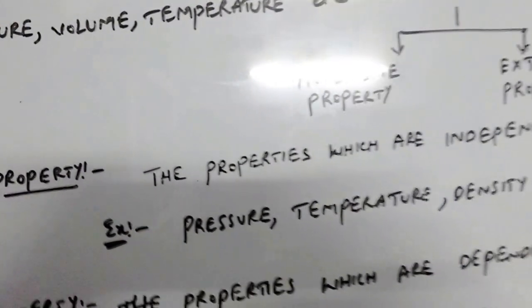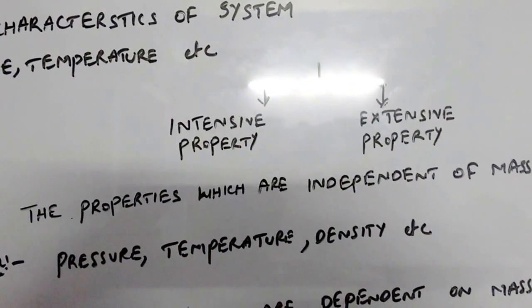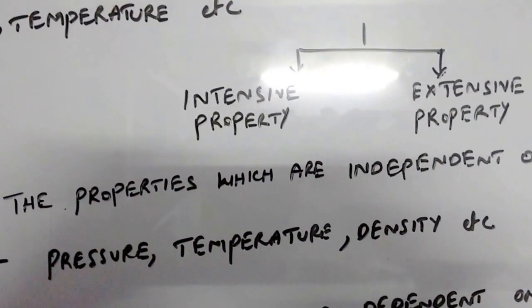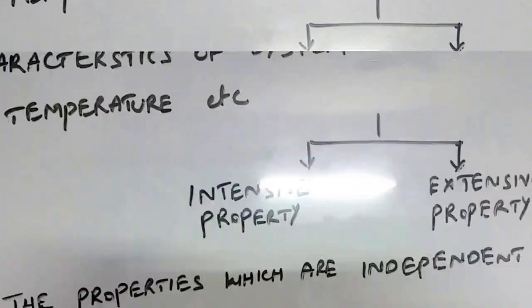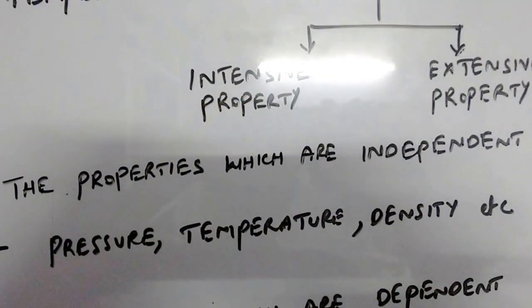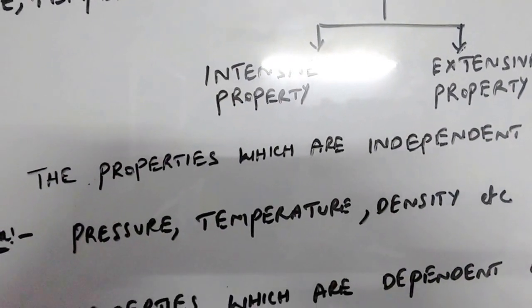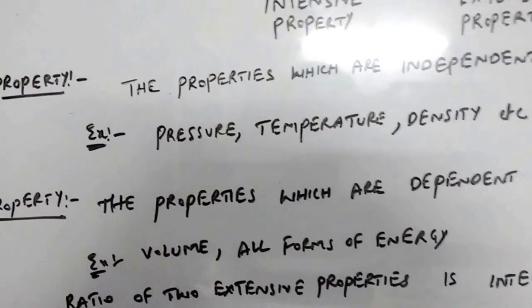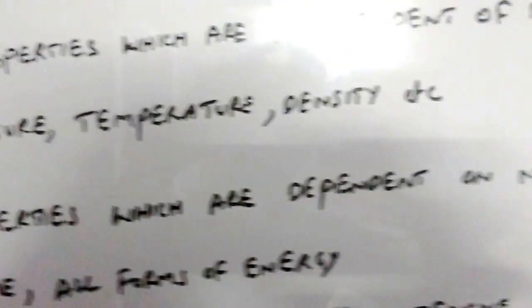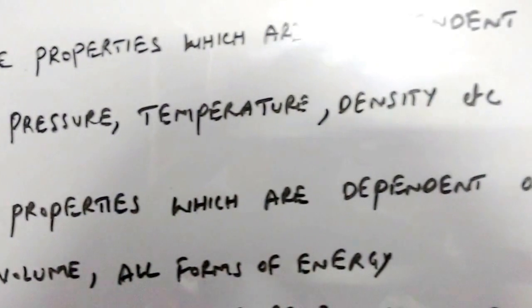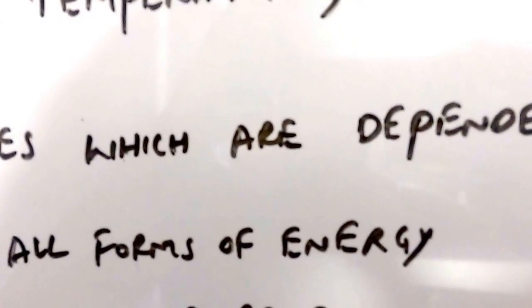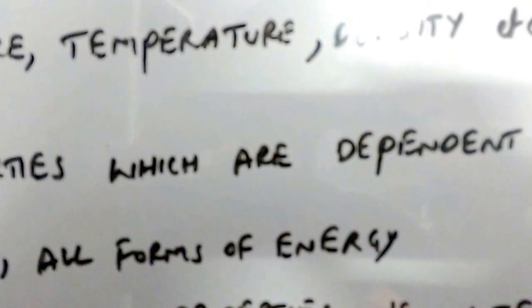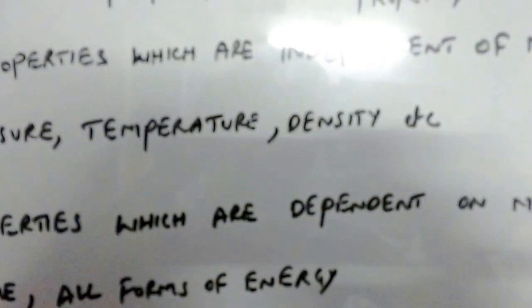There are two types of properties: intensive properties and extensive properties. Intensive properties are the properties which are independent of mass or size. Examples are pressure, temperature, and density — all independent of mass. Extensive properties are the properties which are dependent on mass. Examples include volume, all forms of energy, entropy, and potential energy.